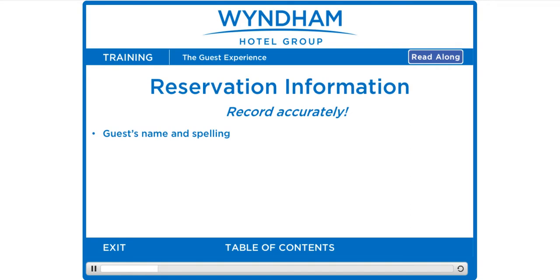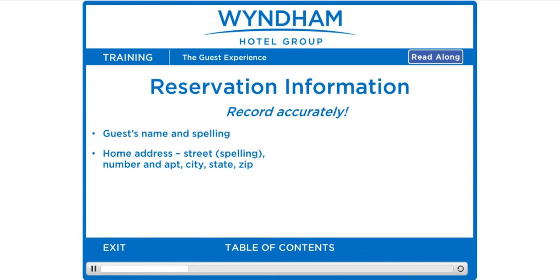The guest's name with accurate spelling. Also, if pronunciation is difficult, note a phonetic spelling in the PMS notes field. The guest's home address — street, ask for the correct spelling if necessary, number and/or apartment, city, state, and zip code.